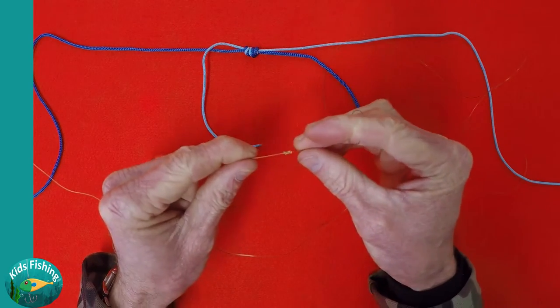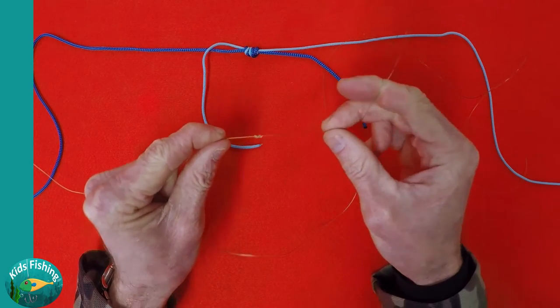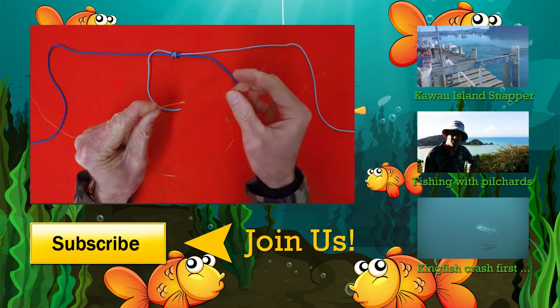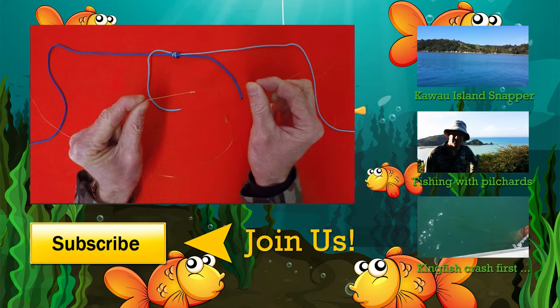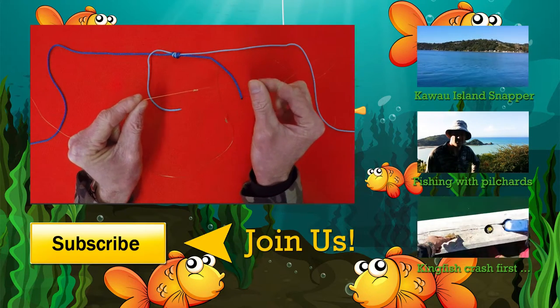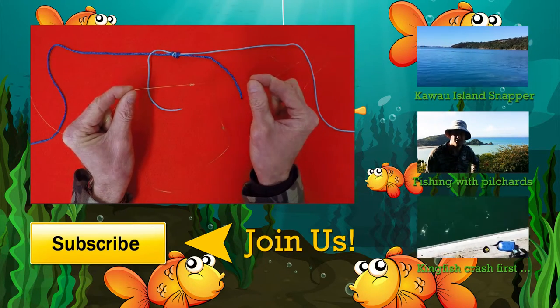One of the other advantages is that it has quite a low profile, which means that it will run through the rings on your fishing rod quite easily, and it's a great all-purpose knot for joining lots of different types of line together.